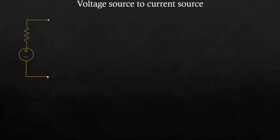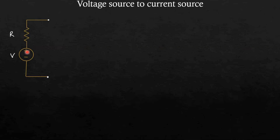There is another technique known as source transformation technique, in which we can convert a voltage source into a current source and a current source into a voltage source. In this class I will tell you how to convert a voltage source into a current source. Here a voltage source in series with a resistance is given — let us say a voltage source of voltage V and resistance R. We can convert this voltage source into a current source.